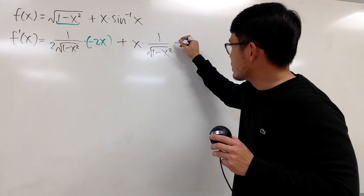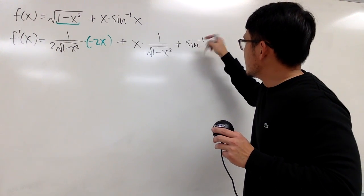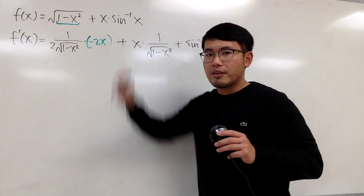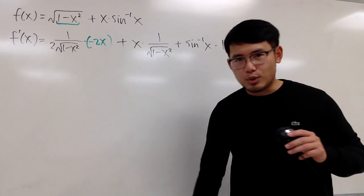And then, the product rule says, we are going to add the second function, which is inverse sine of x, and then times the derivative of the first, which is going to be just a nice one. So, this is what we have.